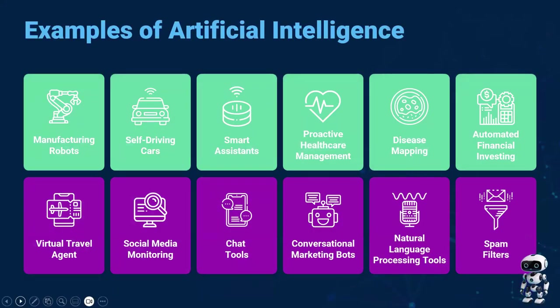A few examples of artificial intelligence that we have today: manufacturing robots used in many factories, self-driving cars, and smart assistants. In healthcare, AI helps with proactive healthcare management and disease mapping. In the financial sector, there's automated financial investing. AI is also prevalent in the travel field as a virtual travel agent. Many companies use AI for social media monitoring, chat tools, and conversational marketing bots — so if you're shopping and need to ask a question or start a return, you're often having a conversation with a marketing bot. There are also natural language processing tools that help process global languages, and spam filters in our email that AI helps manage.